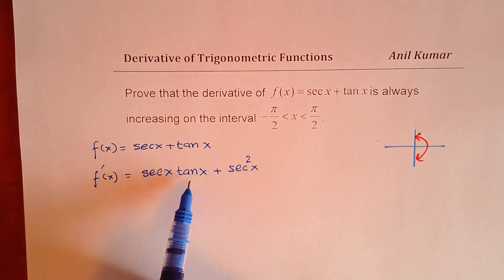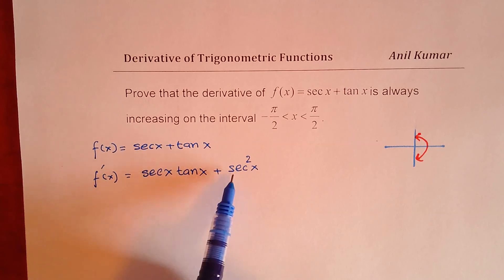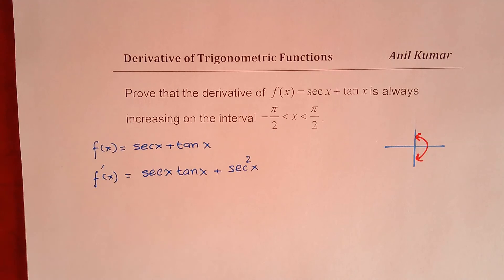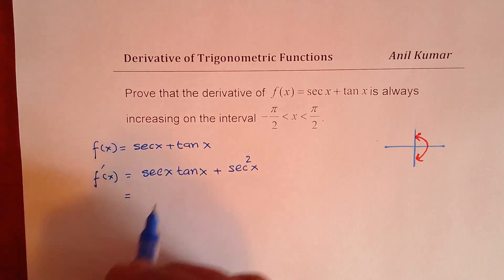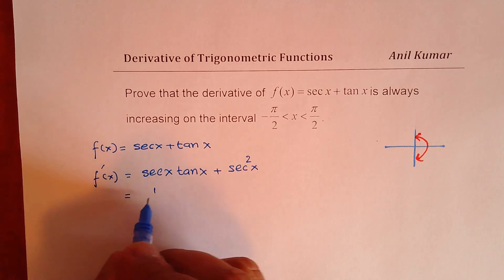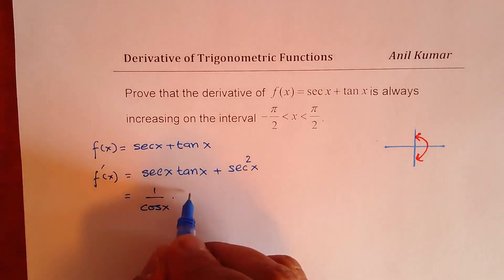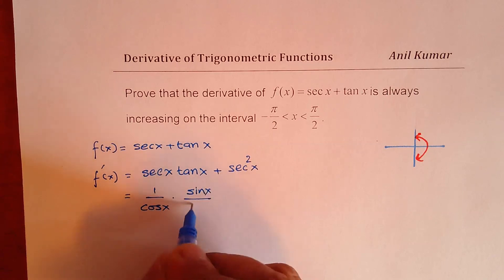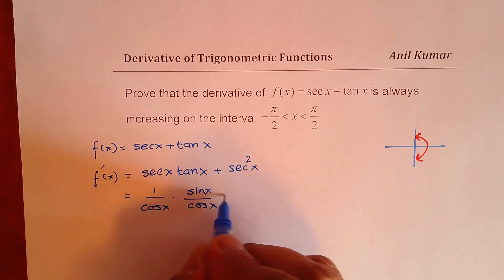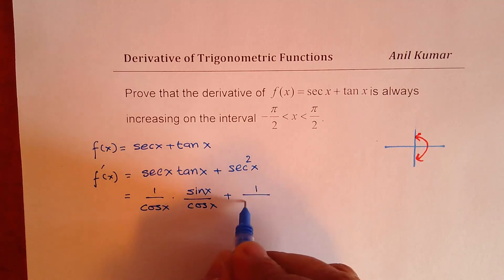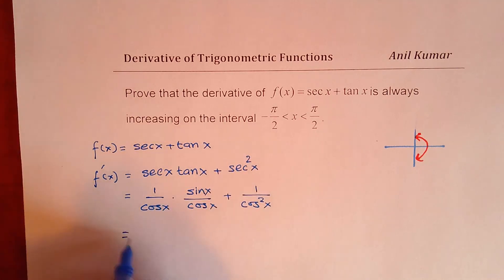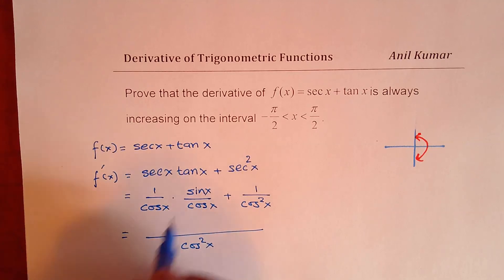The question is whether this combination is positive or not — that is important to understand. So let us try to simplify this. Secant x can be written as 1 over cos x, and tan x can be written as sin x over cos x. Here we get secant squared x, which is 1 over cos squared x. So we get cos squared x as the common denominator, and we get sin x plus 1 in the numerator.